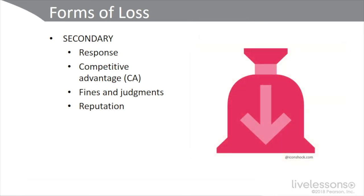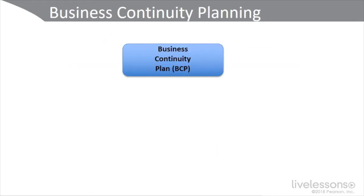These are important to understand because they really are at the heart of our business continuity planning. Business continuity planning, or BCP, can be a plan, a program, or a project. It involves preparing all the activities and procedures that you deploy to avert the loss of a critical business function and service for a predetermined unacceptable amount of time. What we're really trying to prevent is primary loss so that we don't have to worry about secondary loss.